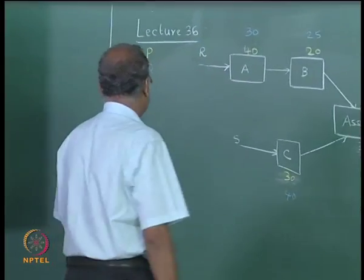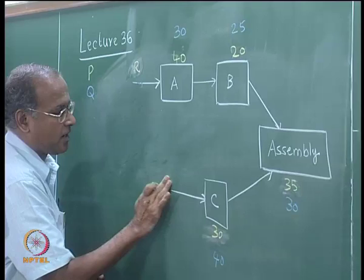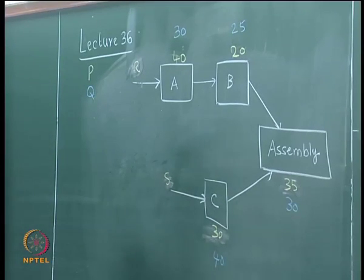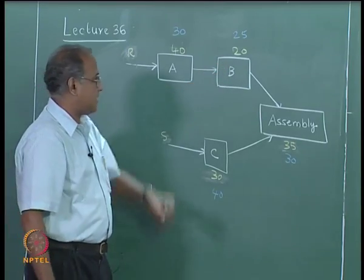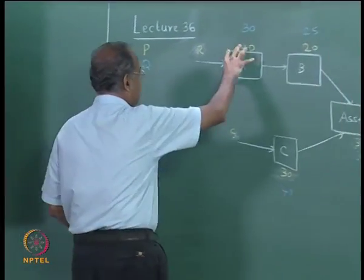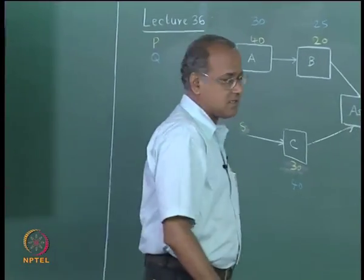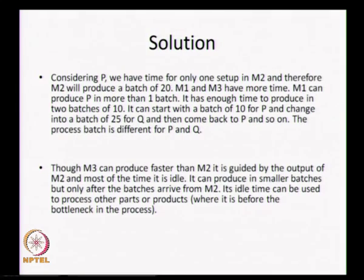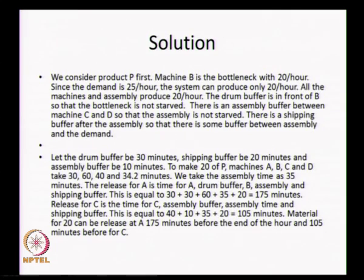Let us assume that we are going to make P first. Looking at product P, all rates are per hour. Machine B at 20 per hour is the bottleneck, so everybody will produce at the rate of 20 per hour — there is extra time on A and C. Since the demand is 25 per hour but the system will produce only 20 per hour, this is the bottleneck.